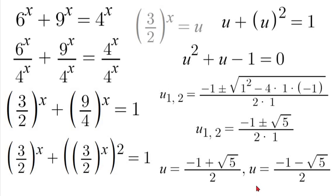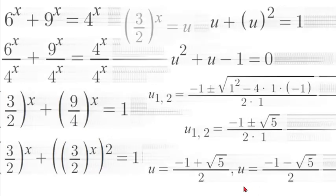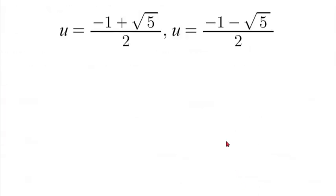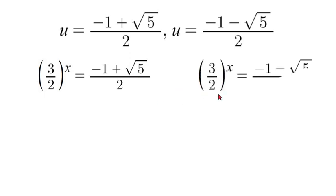Now that we have solved completely for our u value, we can re-substitute in our original u value, which was 3 over 2 to the power of x. So we'd have 3 over 2 to the power of x equals negative 1 plus square root of 5 over 2, and 3 over 2 to the power of x equals negative 1 minus square root of 5 over 2.